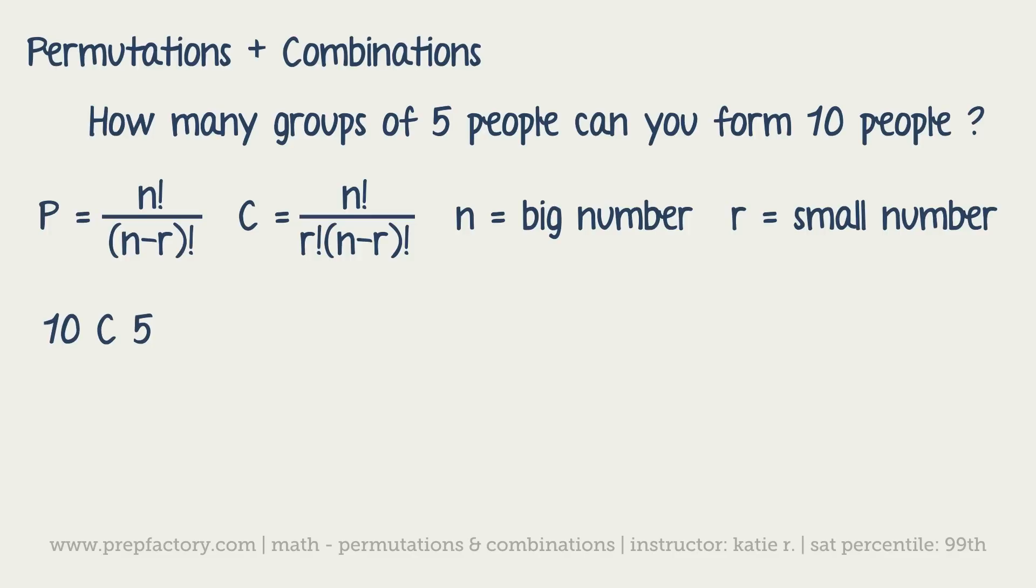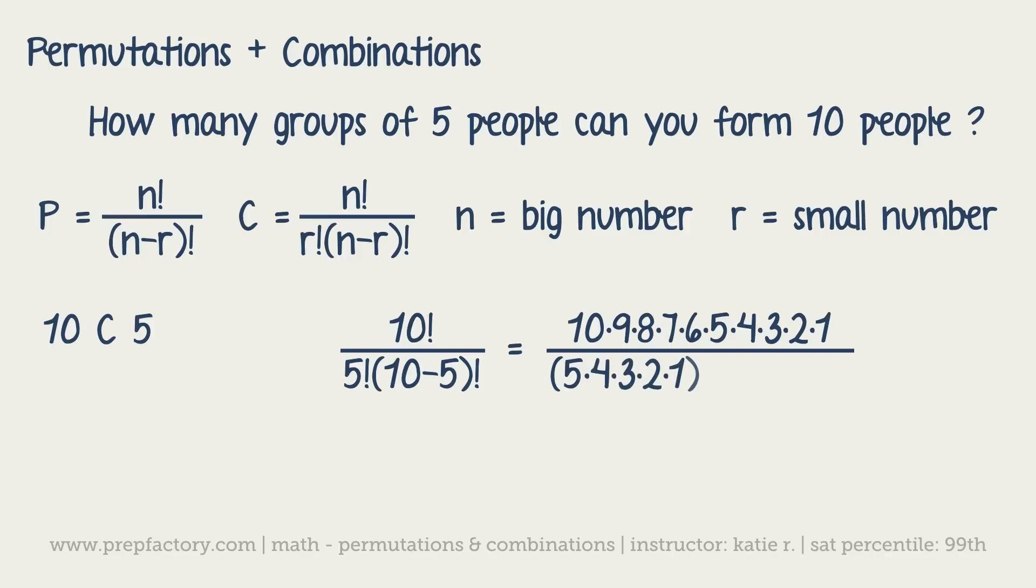That's ten factorial divided by five factorial times ten minus five factorial. So factorial is like ten times nine times eight times seven times six times five times four times three times two times one, over five times four times three times two times one.